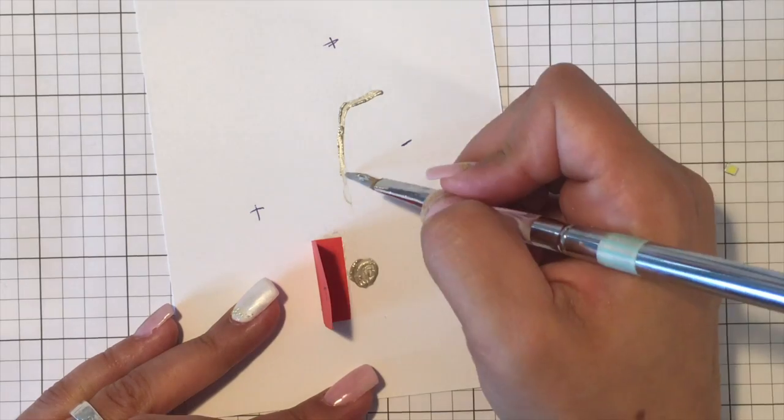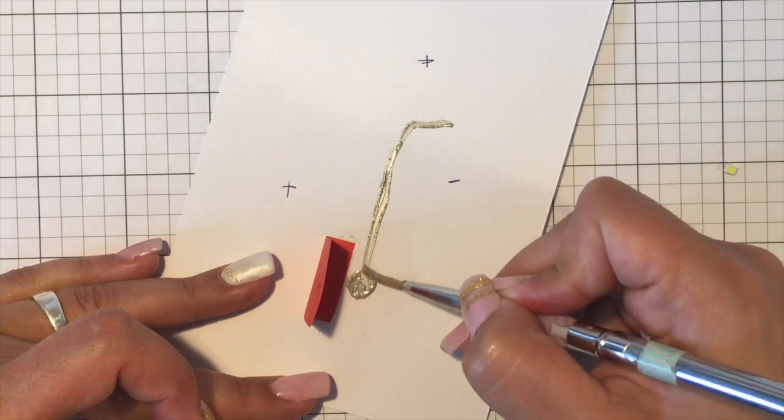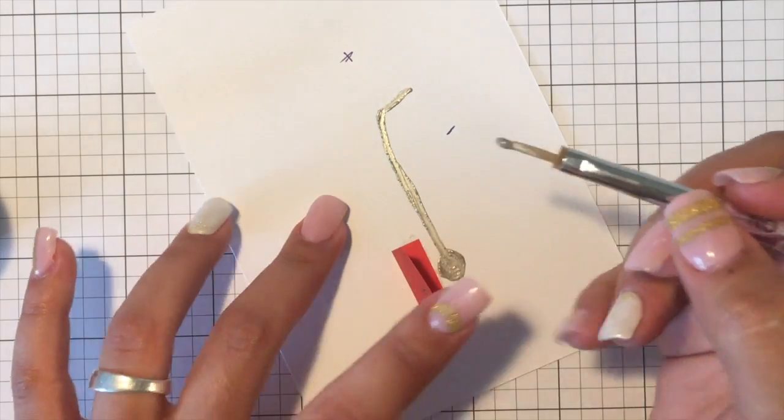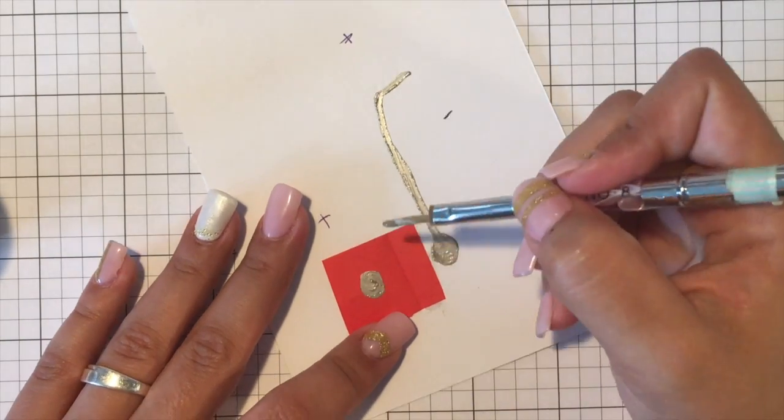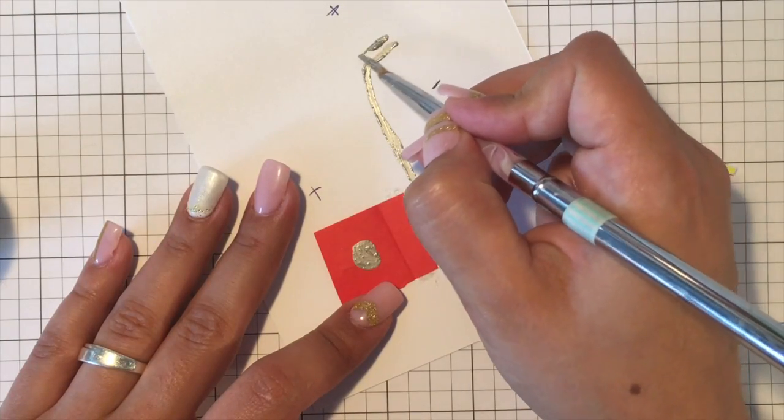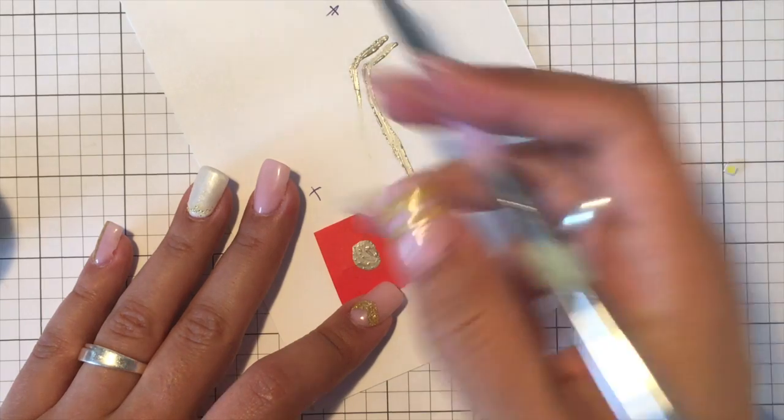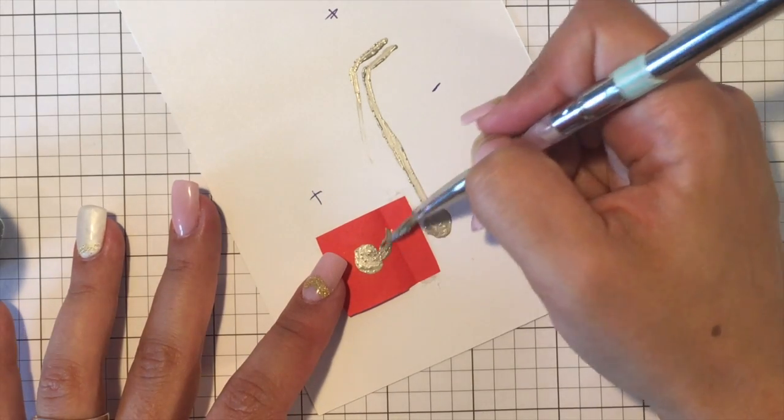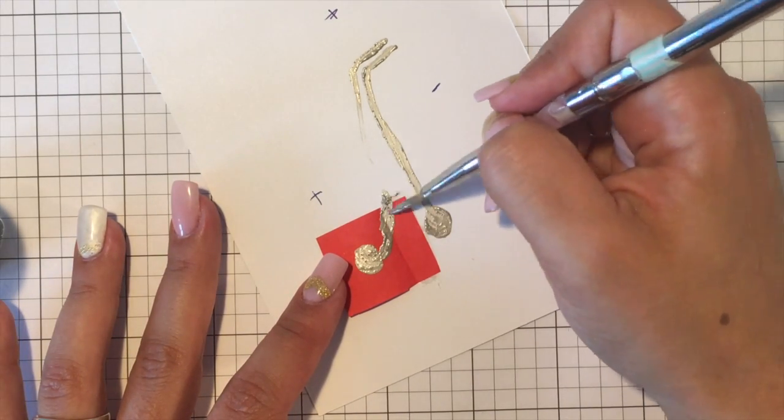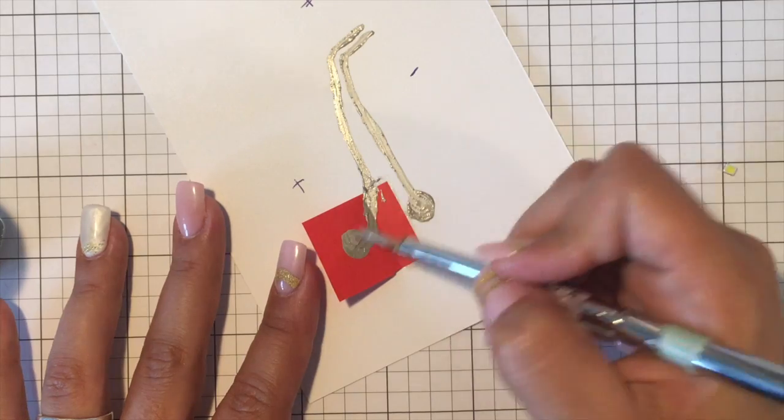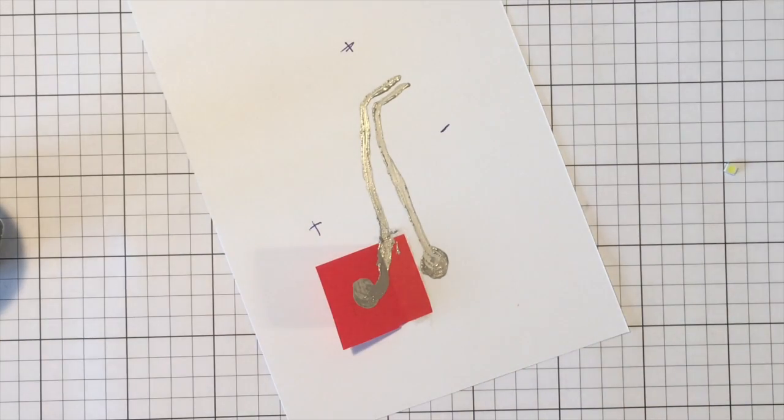Before starting there are some notes you have to take. Make sure that you shake the conductive silver very well before you use it because we need all the conductive silver particles in the paint. The paint itself isn't conductive, so you have to imagine that the electricity will jump from particle to particle. If the distance between two particles is too big the electricity can't flow. While painting with the conductive silver you should open your window because conductive silver is toxic like other paints.